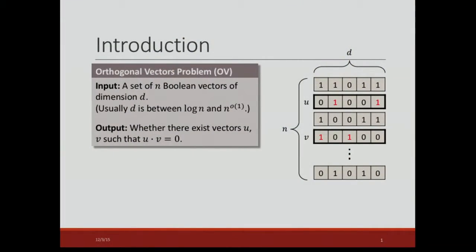We are given a set of n Boolean vectors of dimension D, and usually we consider the dimension D is between logarithmic of n and n to the little-o of one. We want to decide whether there exists vectors u and v such that their dot product is zero.